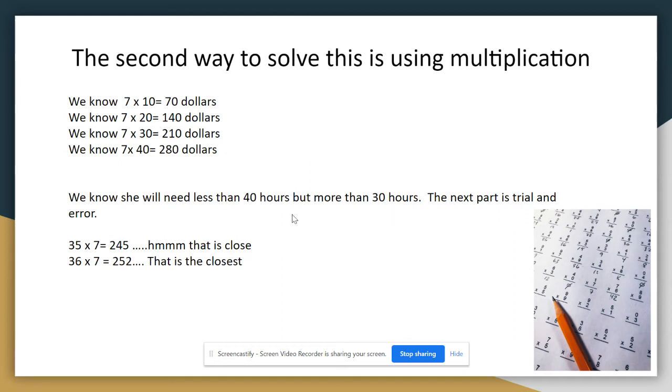So the next part is called trial and error. So the middle of 30 and 40 is 35. So I thought okay, I'll try that. 35 times 7 got me to 245, which is close but not high enough. So I went one higher. 36 times 7 got me to 252, and that's the closest number. So I knew 36 was the number of hours she needed to work.